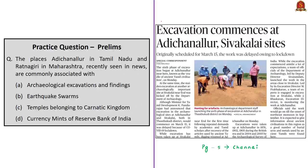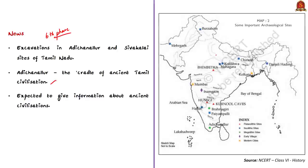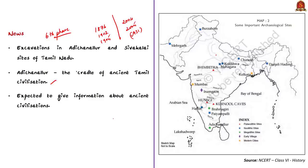Now let us look at the next news article about excavations commencing at Adhichanallur and Sivakalai sites, both located in Tamil Nadu. This news article tells that the sixth phase of excavation began at Adhichanallur, popularly known as the cradle of ancient Tamil civilization. The previous five excavations were taken up at Adhichanallur in the years 1876, 1902, and 1905 during the British era, and later in 2004 and 2005 by the Archaeological Survey of India. Tamil language is one of the oldest languages and its culture dates back to BCE times.